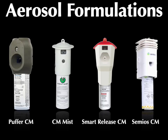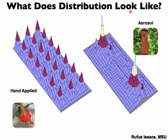For the last part of my talk I'd like to discuss aerosol formulations. Currently there are four formulations available in Washington State: the Puffer CM, CM Mist, Smart Release CM, and the SEMIO system. What does the distribution of pheromone from an aerosol look like relative to hand-applied dispensers? Excel files from Rufus Isaac at MSU illustrate what 400 dispensers per acre looks like — each point represents a dispenser with an even distribution of pheromone release. With an aerosol you only have one or two per acre, but each aerosol emission releases a vastly greater amount of pheromone, represented by much larger peaks.